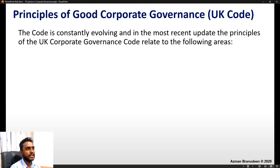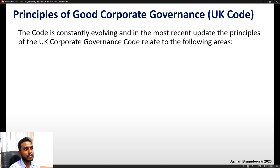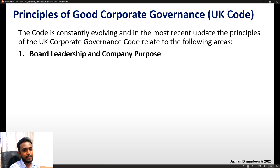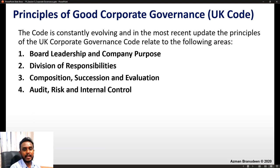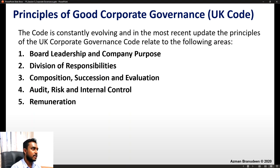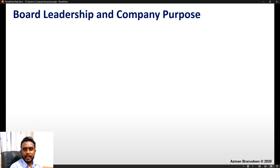Now we look at the principles of good corporate governance, primarily the UK Code of Corporate Governance. The code is constantly evolving, and in the most recent update, the principles relate to five areas: first, board leadership and company purpose; second, division of responsibilities; third, composition, succession and evaluation; fourth, audit, risk and internal control; and fifth, remuneration. These are very important and it is prudent to remember all five.